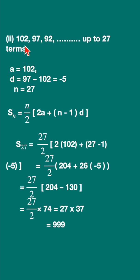Second sum: this is the sequence. Here again, this is an arithmetic progression. The common difference here is minus 5. Common difference you get by subtracting the first term from the second term.